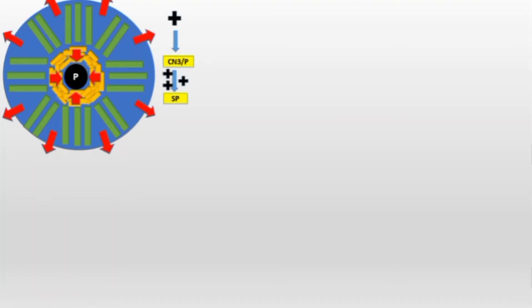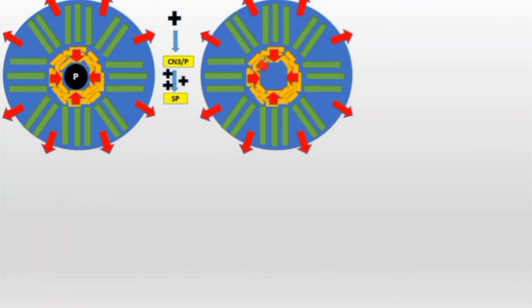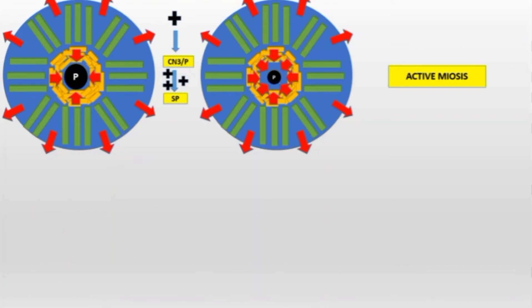Cranial nerve 3 carries parasympathetic fibers that supply the sphincter pupillae. When there is stimulation of cranial nerve 3 or the parasympathetic fibers, there is additional stimulation to the sphincter pupillae muscles, producing more force trying to make the pupil small. The pupil gets small — this is called active miosis, because the sphincter pupillae muscle is actively stimulated, causing miosis.